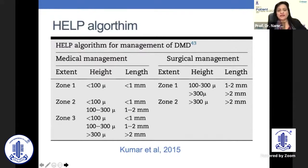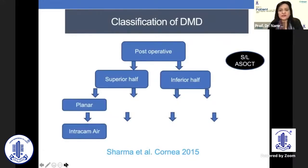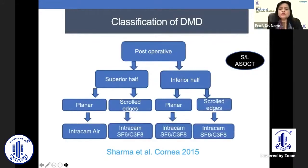DMDs can be divided into three zones — one, two, and three — depending on the height, length, and extent of the DMD. This classification based on anterior segment OCT also helps you arrive at an algorithm of management.